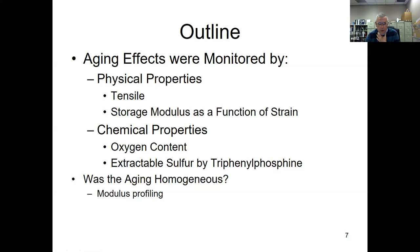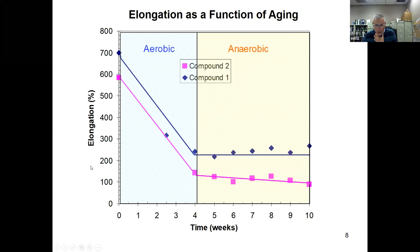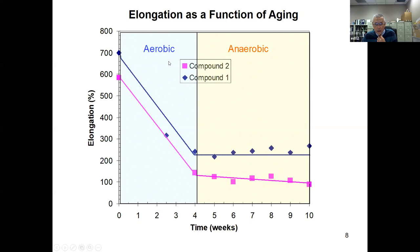We have four weeks of aerobic aging followed by six weeks of pure anaerobic — no oxygen present, dissolved oxygen removed, kept in a sealed reactor — for a total of 10 weeks. Here is elongation to break as a function of time. During the four weeks of aerobic oven aging, compound one with antioxidants shows a decrease in elongation to break, then no change during anaerobic aging. Compound two without antioxidants also decreases in elongation to break, then shows no change during anaerobic aging.